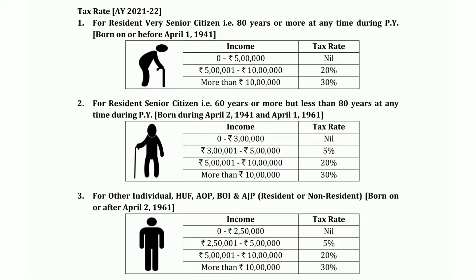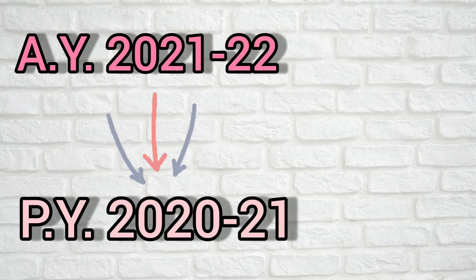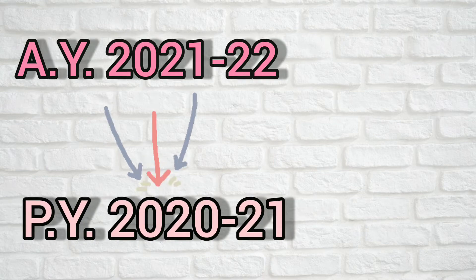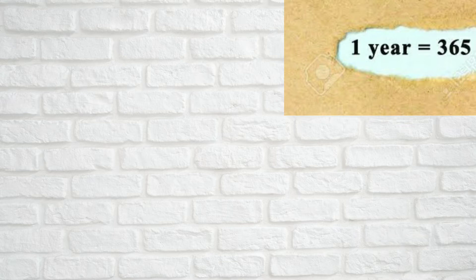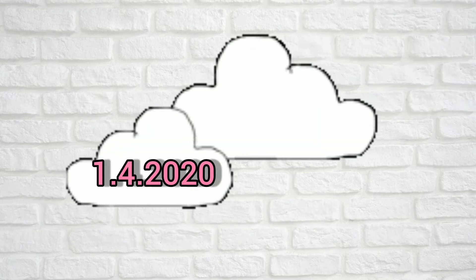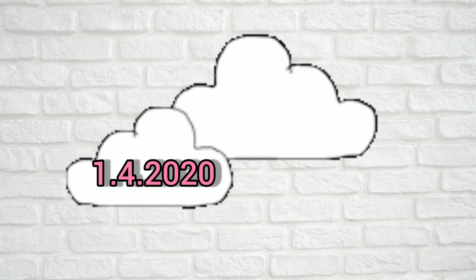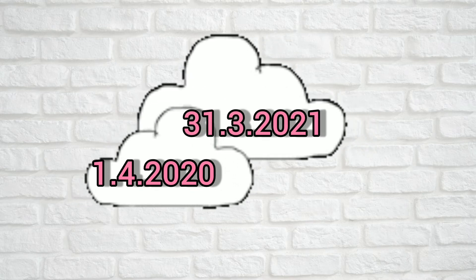So here we are discussing about the Assessment Year 2021-22, which is the Previous Year 2020-21. Humhe pata hai ek complete year 365 days ka hota hai. Agar hum Previous Year 2020-21 ki baat kar rahe hai, toh ye start hota hai first April 2020 mein aur end hota hai 31st March 2021.